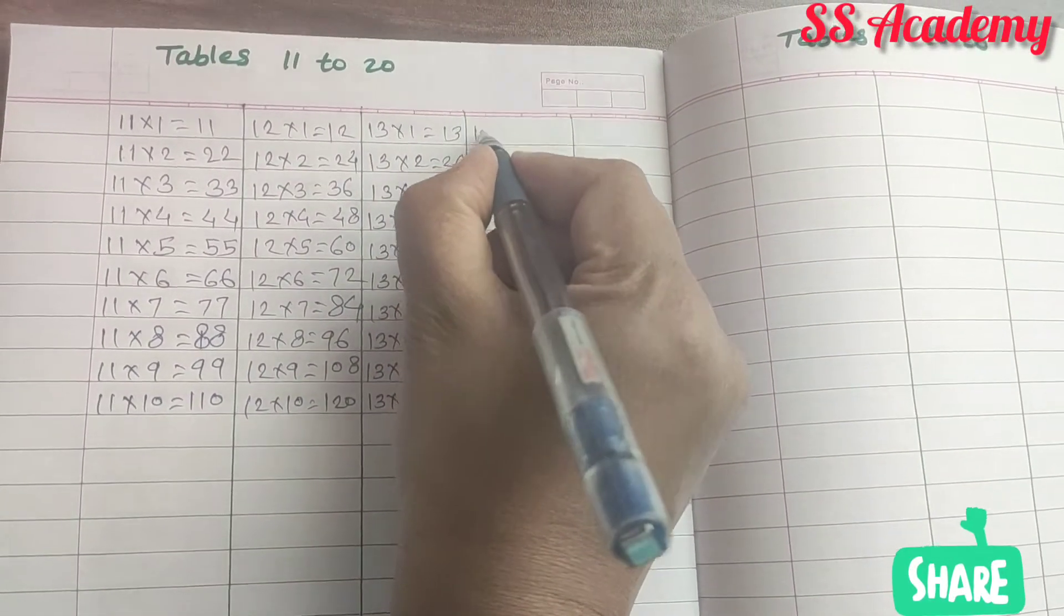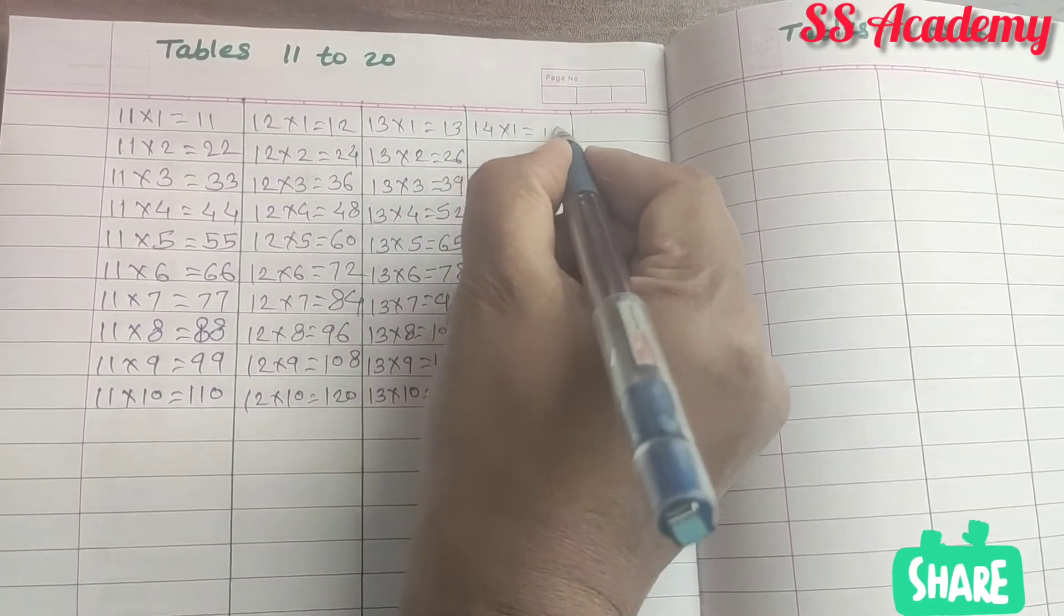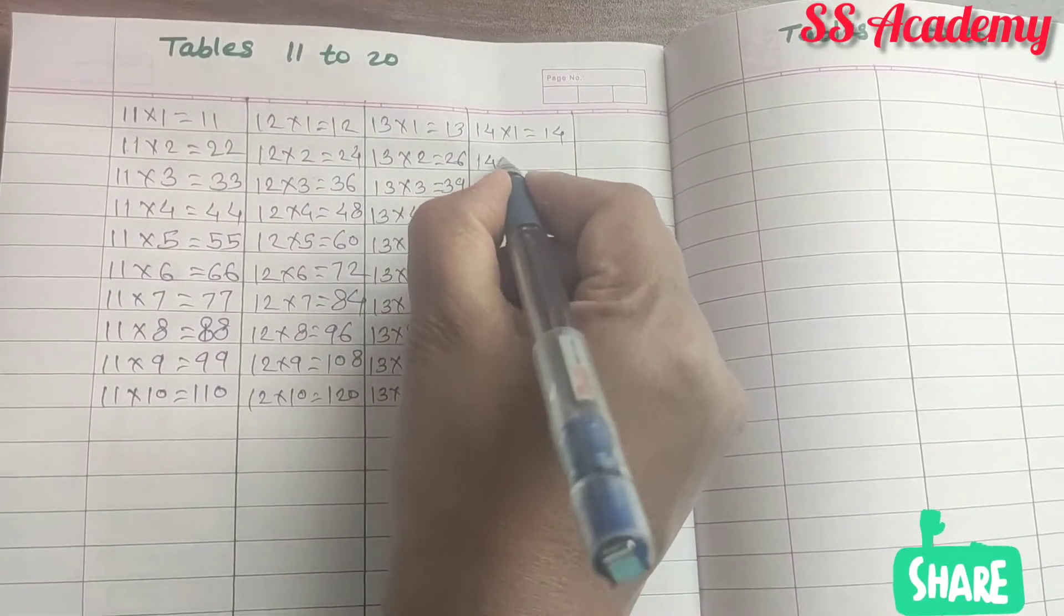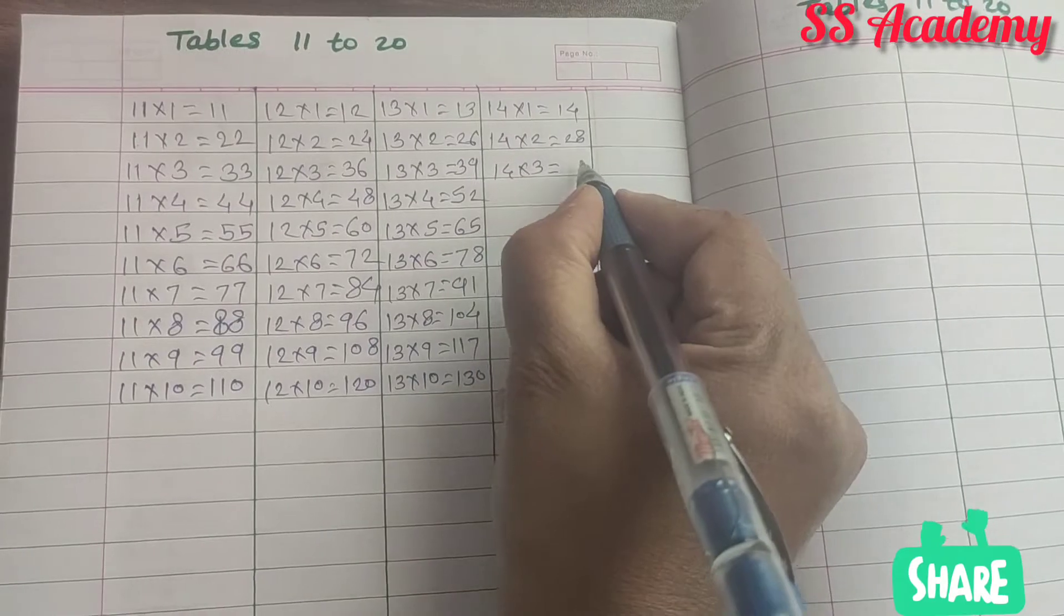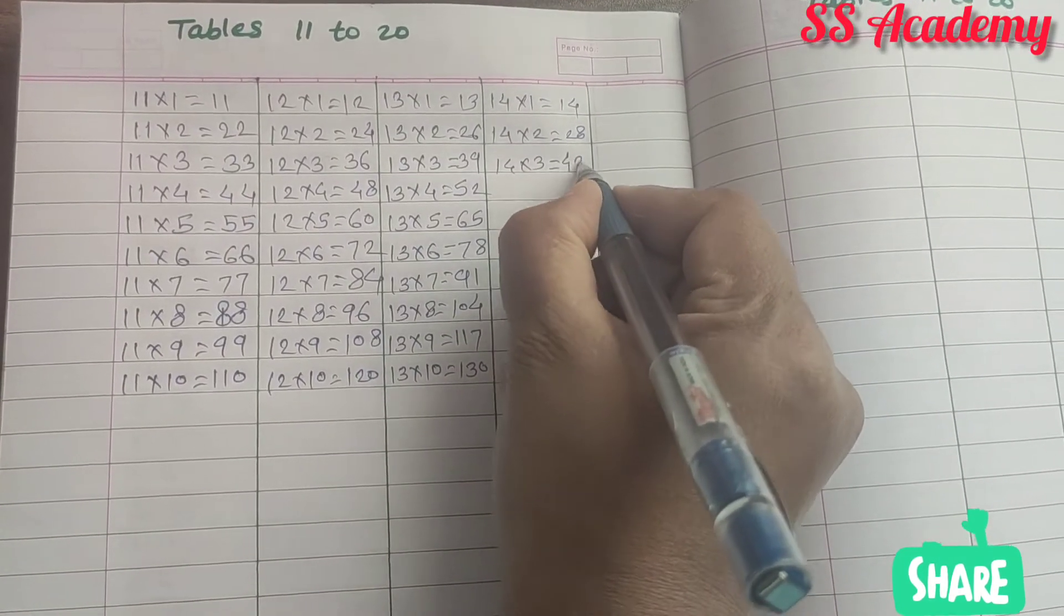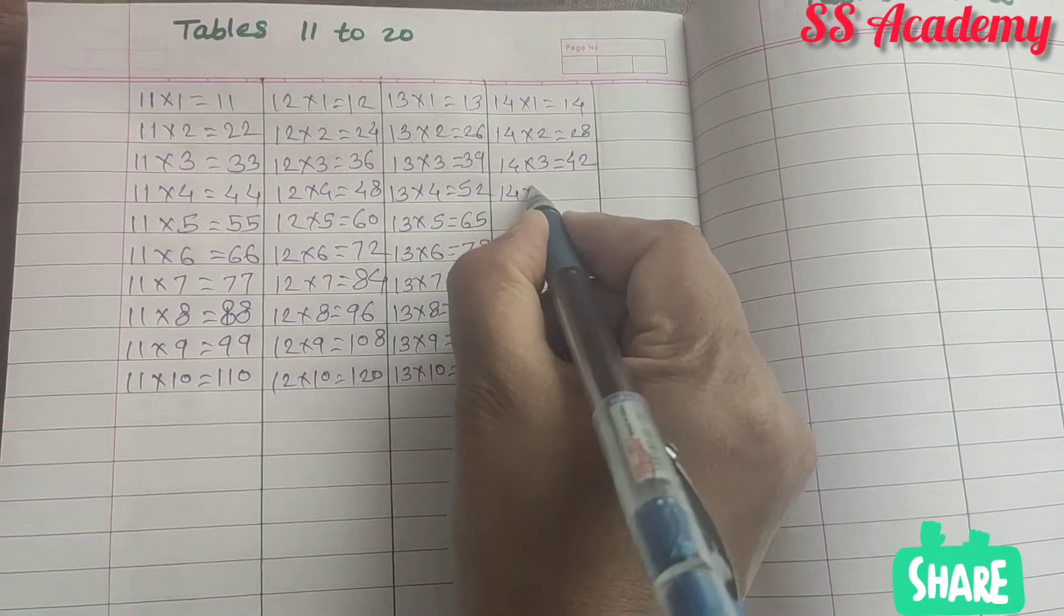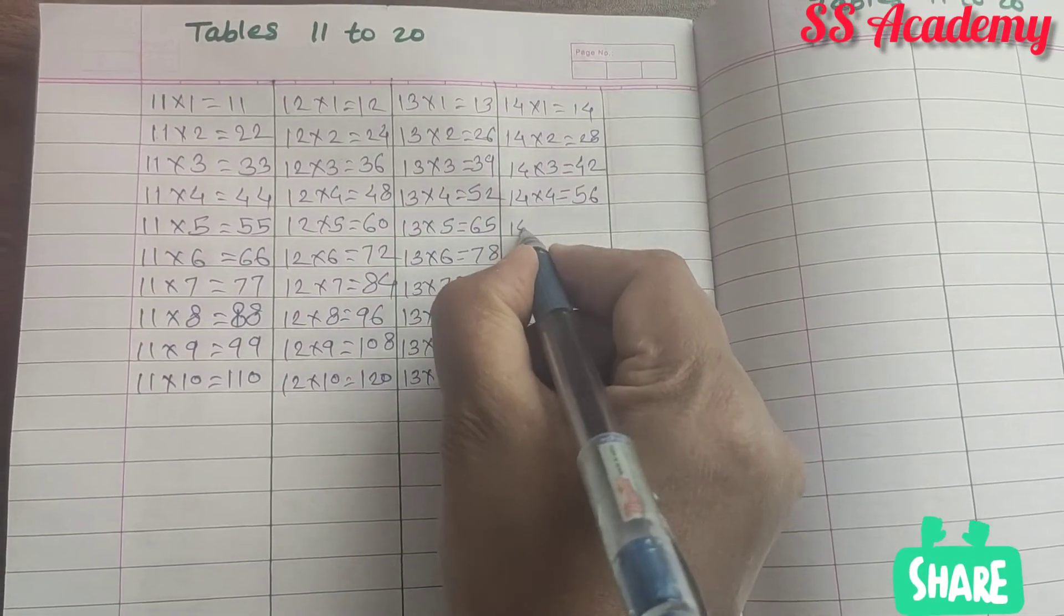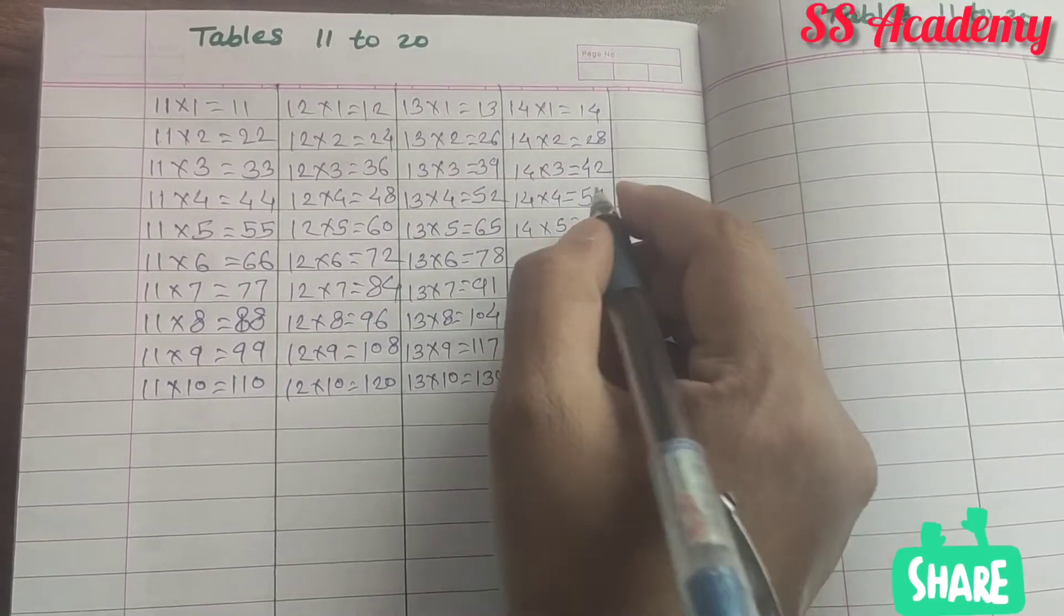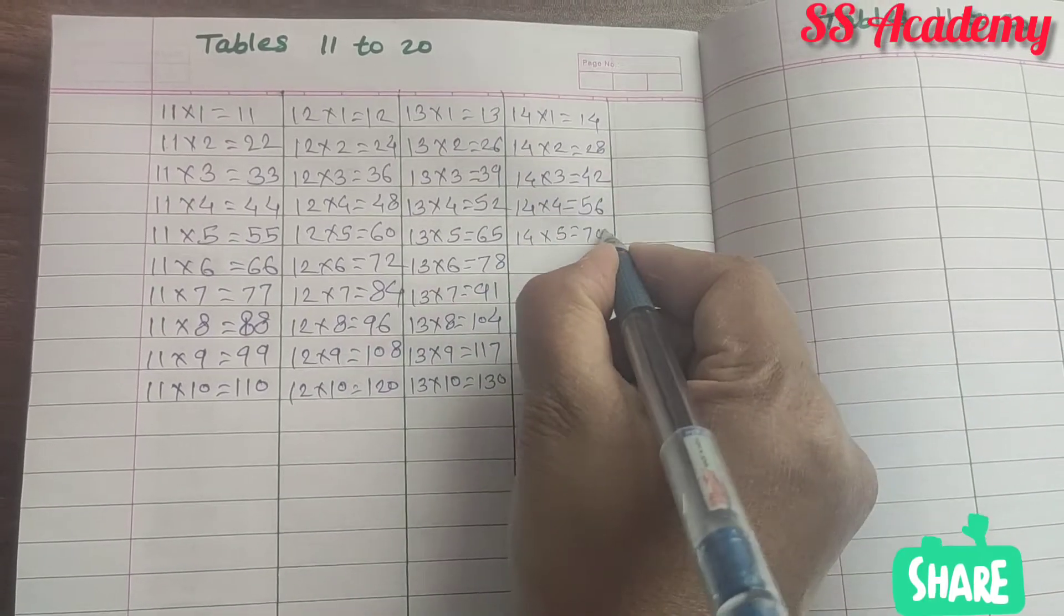Now next 14. 14 times 1 is 14. 14 times 2 is 28. 14 times 3 is 42. 14 times 4 is 56. 14 times 5 is 70.